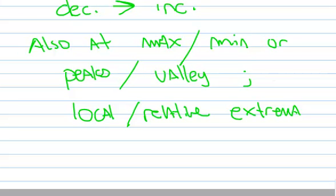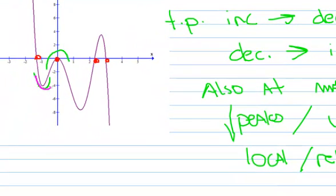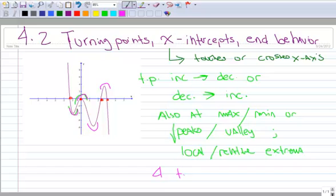So when I look at the graph, I can obviously see that there are several turning points. There's one, two, three, and four. So in this particular case, there are four turning points.